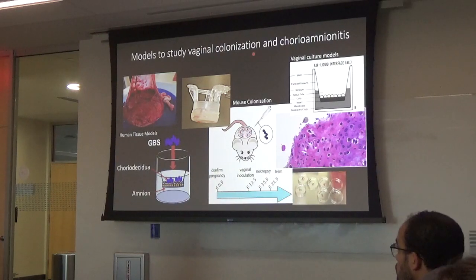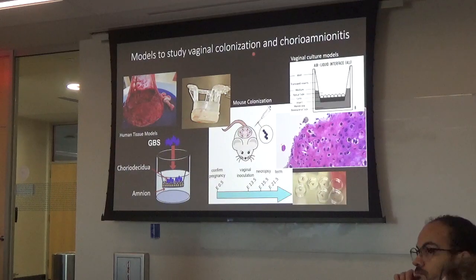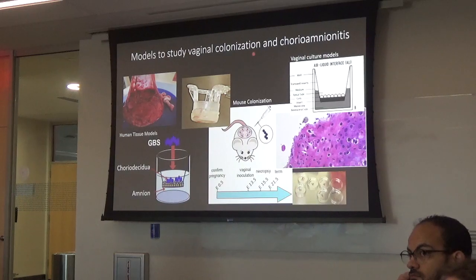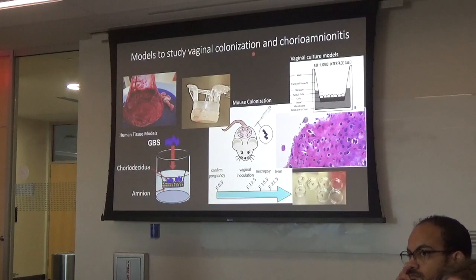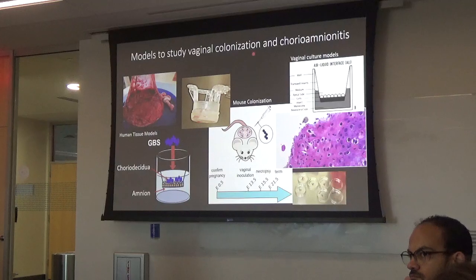Question: Is it possible that an infection causes so much inflammation that it leads to early labor? Answer: Yes, we absolutely know that's true. Anything that causes inflammation in the genital tract puts women at increased risk for preterm birth. Gonorrhea, chlamydia, trichomonas — all sexually transmitted infections we know, if left unchecked, result in much higher rates of preterm birth. If we treat those women, the risk goes down. Because inflammation during pregnancy is so tightly regulated, anything that tweaks that system puts the baby at risk.